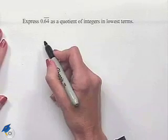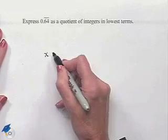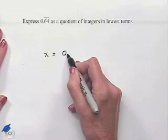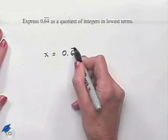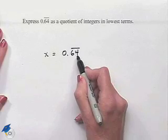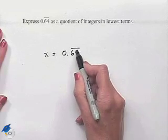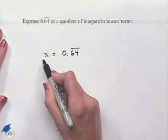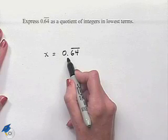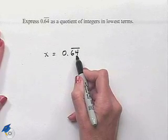We're going to do this process by beginning with a variable x set equal to the given number. Next, we note that there are two digits underneath the repeating portion. We're going to multiply both sides of this equation by 100 because that would be 10 to the second power.